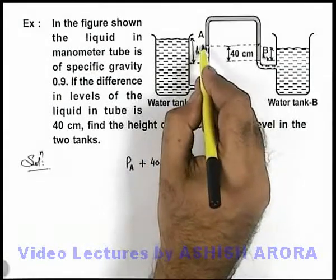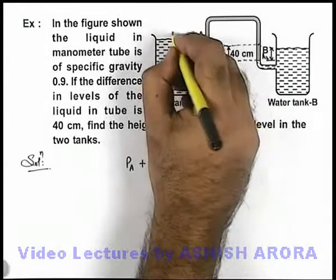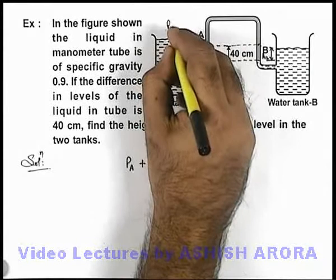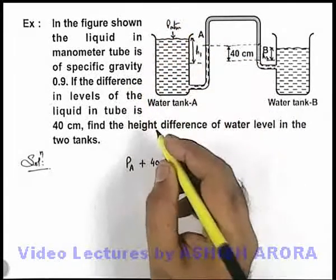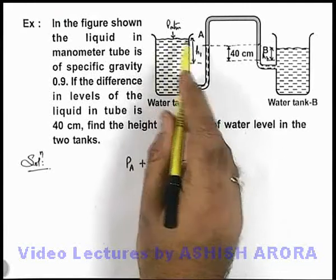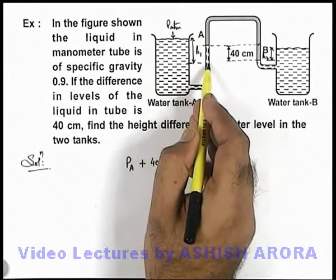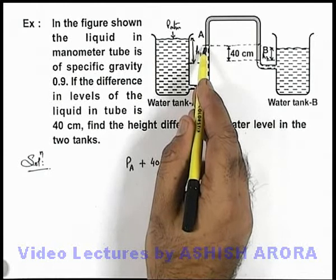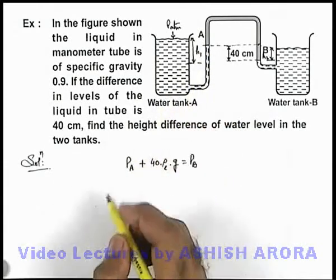And pressure at A we can calculate from this side. This surface is open to atmosphere. If it is atmospheric pressure, then we can write down pressure at this point will be P atmospheric plus h1 ρg minus 40 ρg. So in this situation we can write this as...